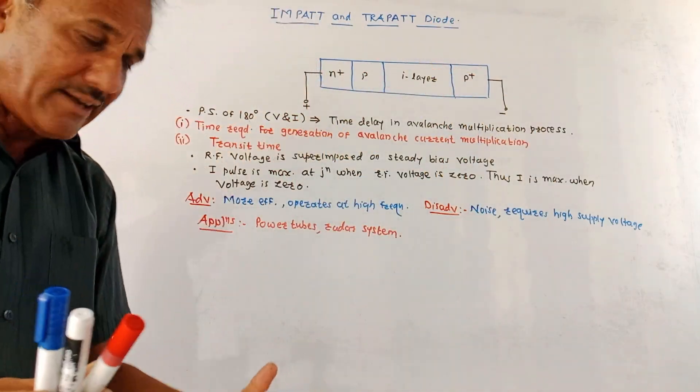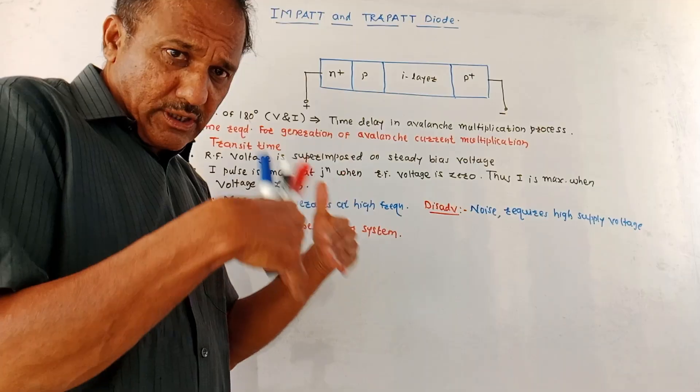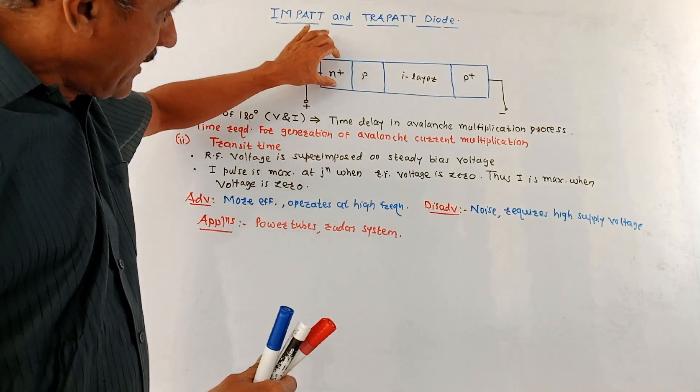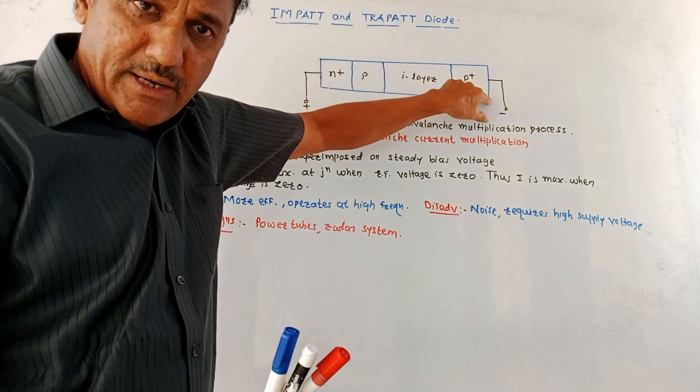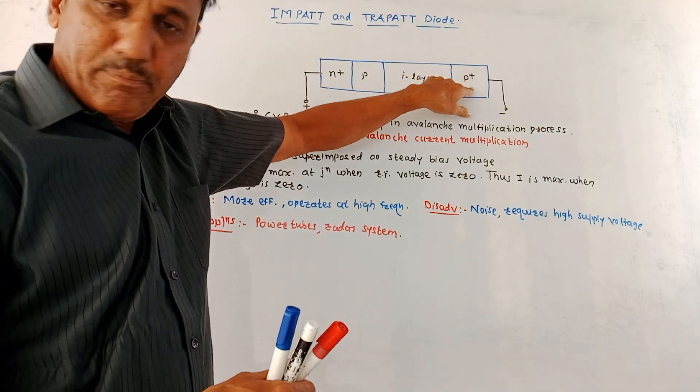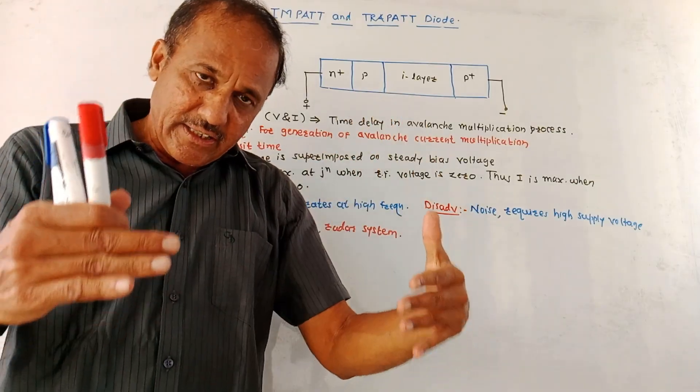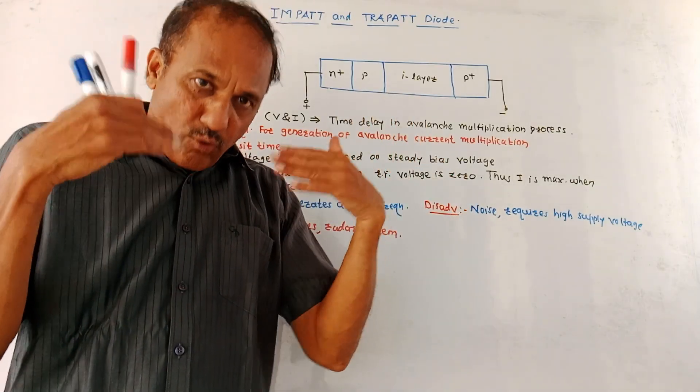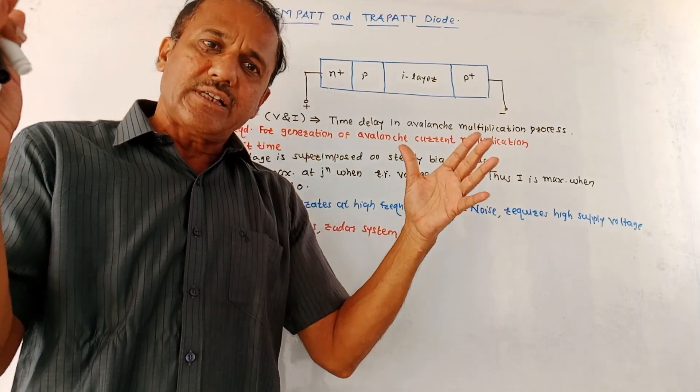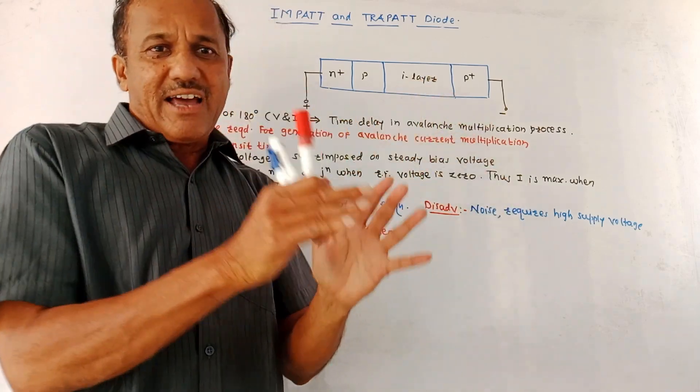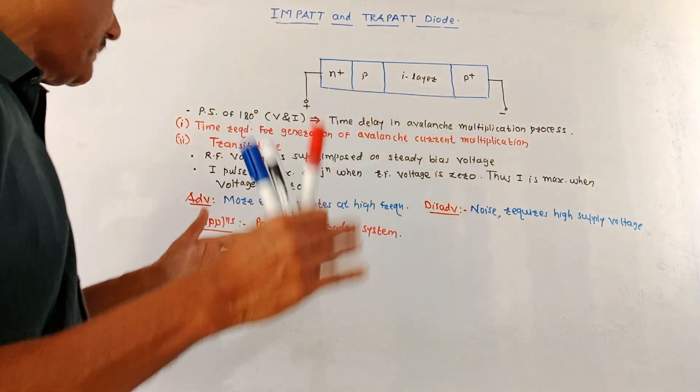During positive half cycle, as the positive signal goes on increasing, more number of holes are injected in N plus region and more number of electrons are present in P plus region. Those electrons try to accelerate and strike to the crystal lattice. So more number of electron hole pairs are generated. That means avalanche process takes place.